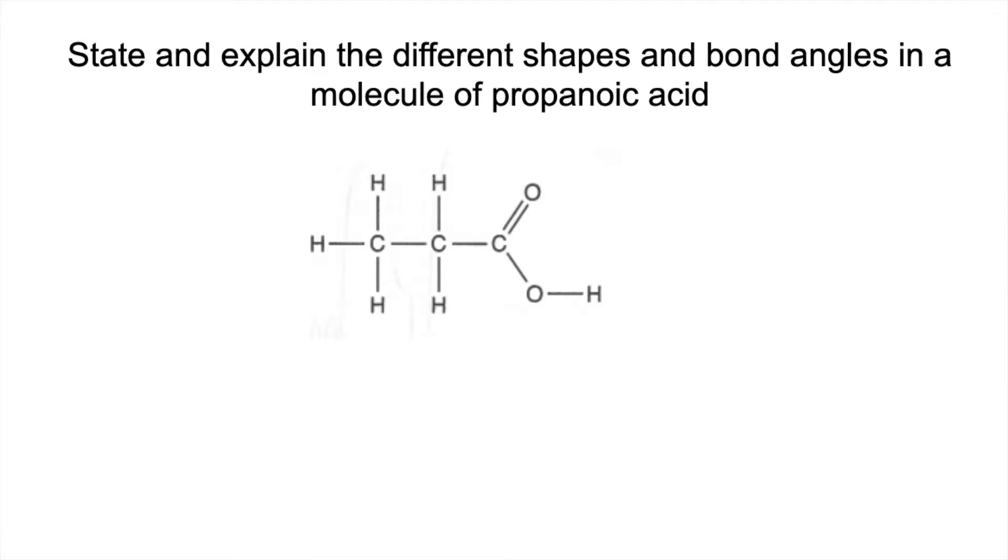Okay, so the first atoms we'll look at are these two carbons here. They're both tetrahedral in shape, and the reason for that is you've got four electron regions around the carbons. They're all bonding regions, therefore there's equal repulsion, and the angle associated with that is 109.5 degrees.